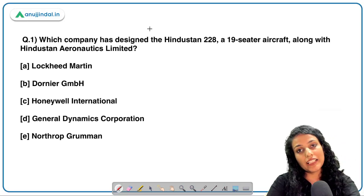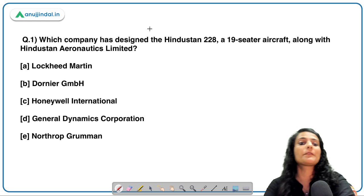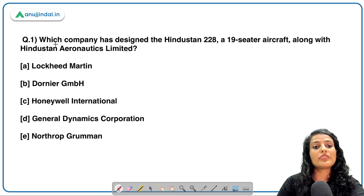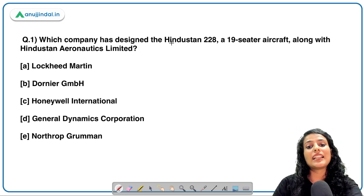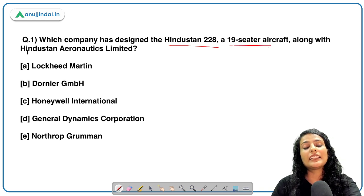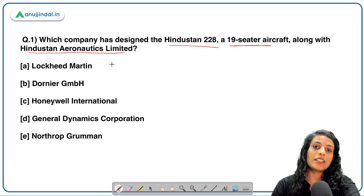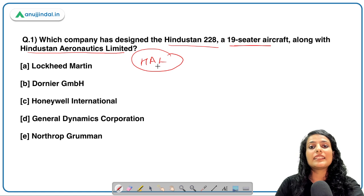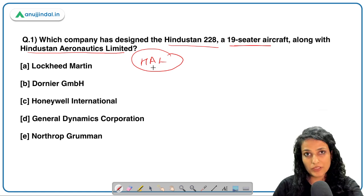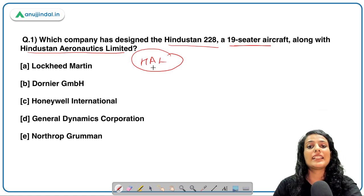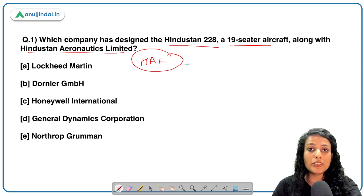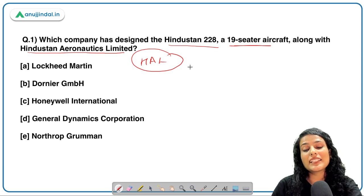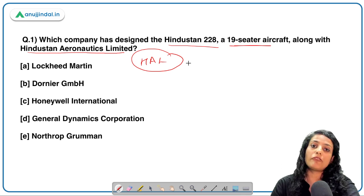Let's get started with today's session of daily MCQs. The first question is: which company has designed the Hindustan 228, a 19-seater aircraft, along with Hindustan Aeronautics Limited? HAL is a public sector aerospace industry owned by the Government of India, and its board of directors are appointed by the President through the Ministry of Defence.